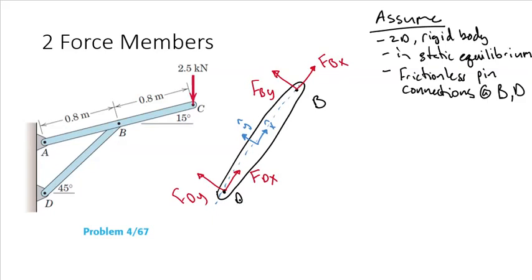Isolating member DB, we can draw a free body diagram of this member with pin reactions at D and B. Our assumptions are that this is a 2D rigid body problem in static equilibrium. To simplify my analysis here, I have put the x-axis acting along the member from D to B.